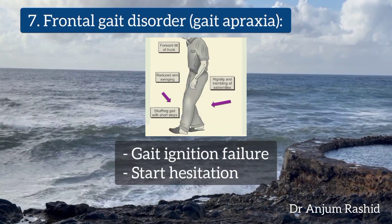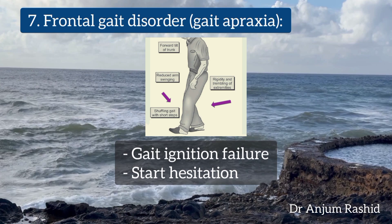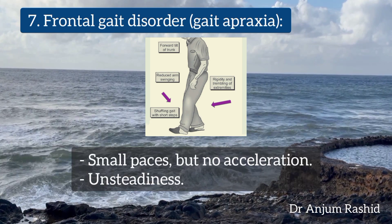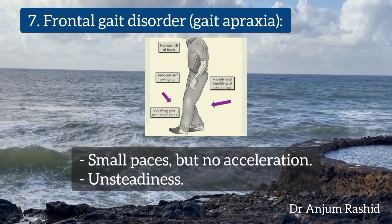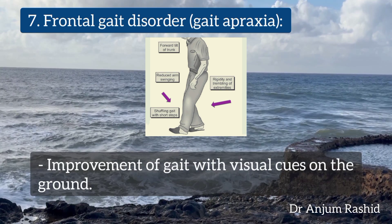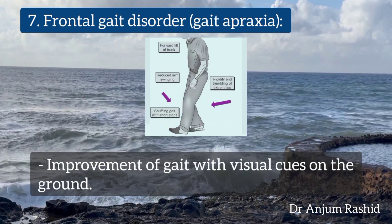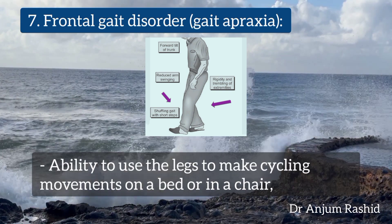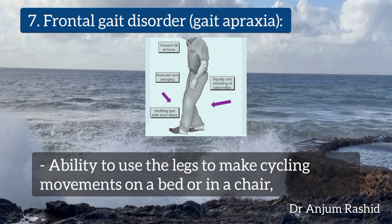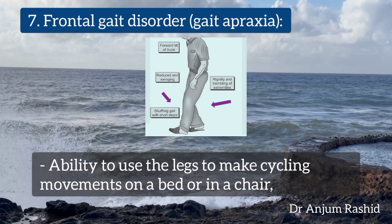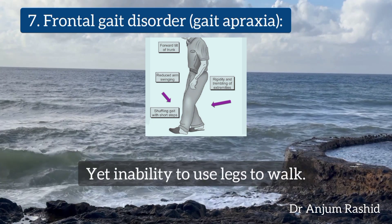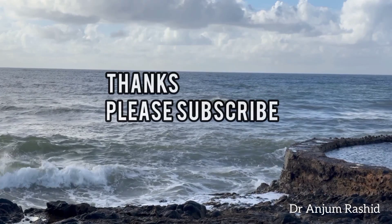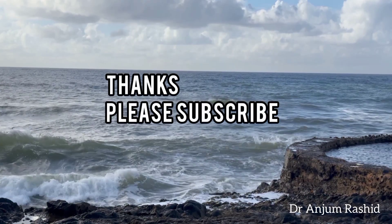The last type is frontal gait disorder or gait apraxia. Features include gait ignition failure, start hesitation, and small paces but without acceleration. There is unsteadiness and improvement of gait with visual cues on the ground. There is prominent swinging of the arms, and the patient has the ability to make cyclic leg movements on a bed or in a chair, yet is unable to use the legs to walk.